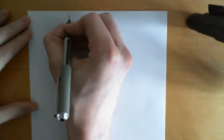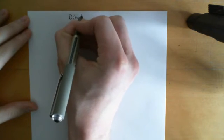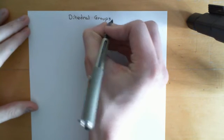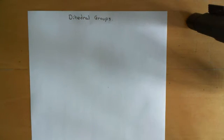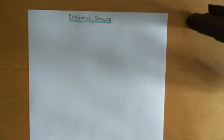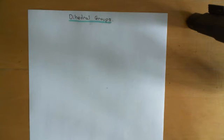Welcome to this next video in the playlist on group theory. In this video, what we're going to discuss is the dihedral groups. Now the dihedral groups, like the symmetric groups and the cyclic groups that we've discussed in previous videos in this playlist, are a whole class of many different groups. They are denoted capital D with subscript little n, where little n can vary over the whole of the natural numbers. Just like with the symmetric groups S_n and cyclic groups C_n, the dihedral group D_n is going to be a group of symbols representing permutations of the set containing all natural numbers up to and including little n.